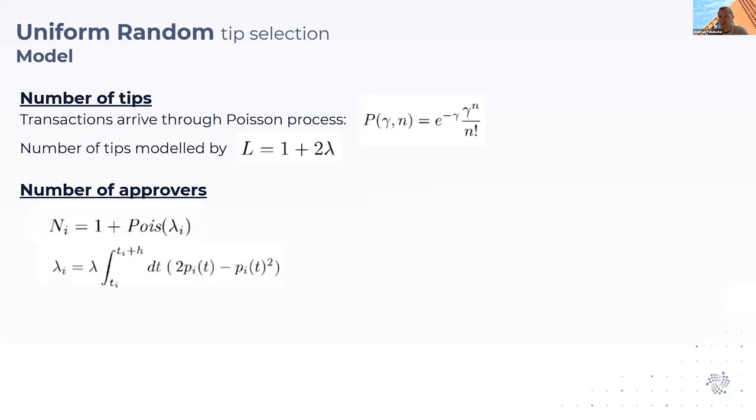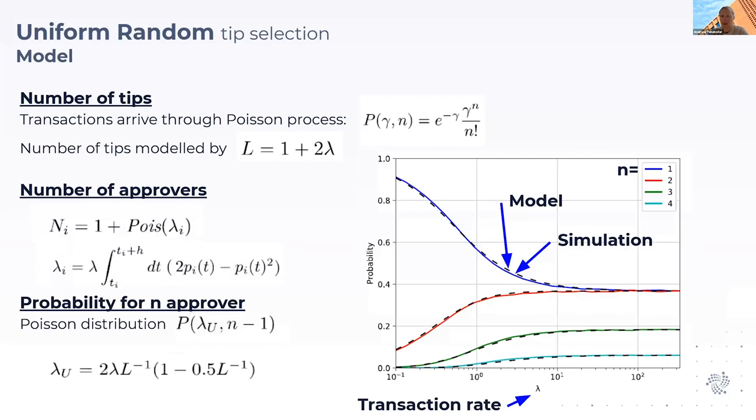We find that for a given transaction, the number of approvers is also Poisson distributed, where it's an integral form that depends on the probability that a certain transaction is being picked while it is a tip. From this number of approvers, we can derive the probability distribution.